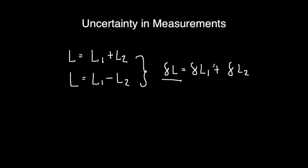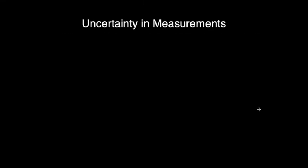If you have any questions, you can ask me in class. Now I want us to go to a more difficult topic — not really difficult, but just a little bit more involved. We dealt with adding and subtracting two measurements with individual uncertainties. What about dividing and multiplying? Let's go about that.